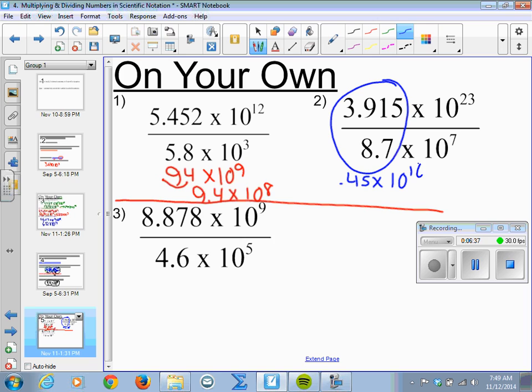Decimal point, we're going to move it over to make it scientific: 4.5. And this gets smaller, 10 to the 15th.